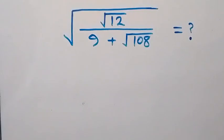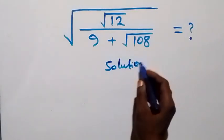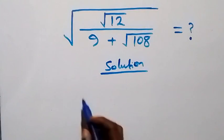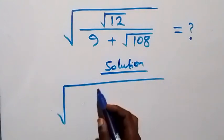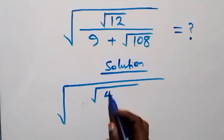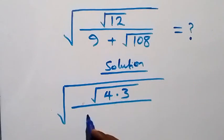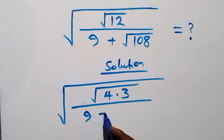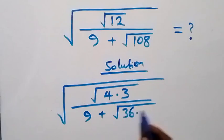Hello, you're welcome. How to solve this nice square root problem. From what we are given here, we can rewrite this as square root of — roots 12 can be written as root 4 times 3, then divided by 9 plus root 1 and 8, which can be written as root 36 times 3.